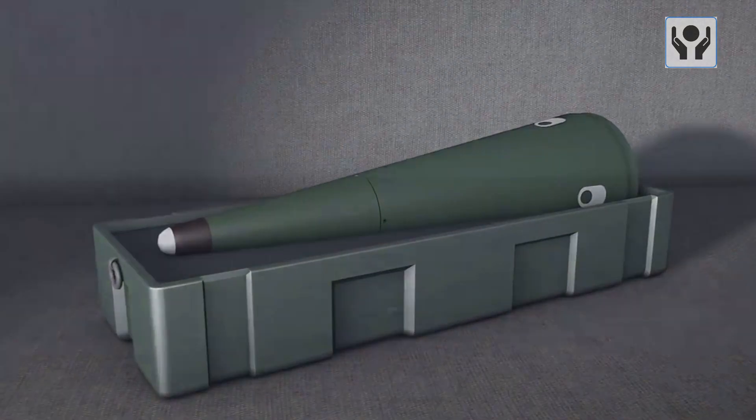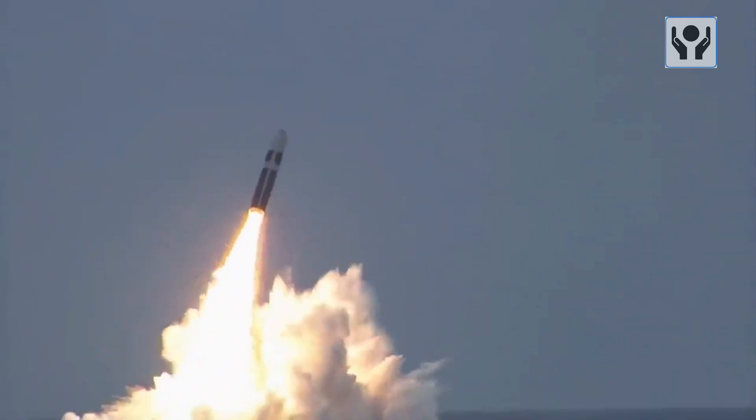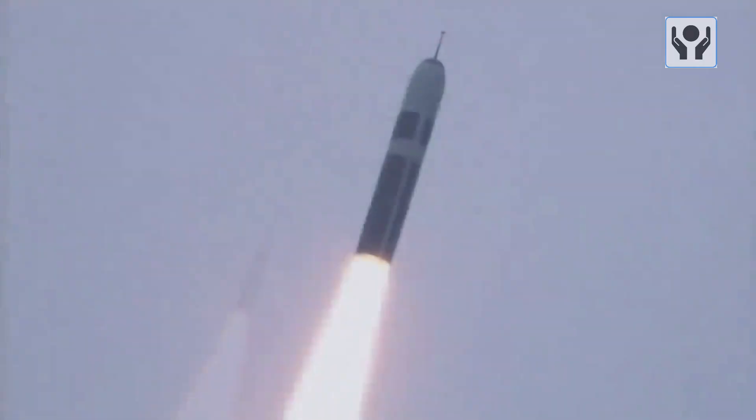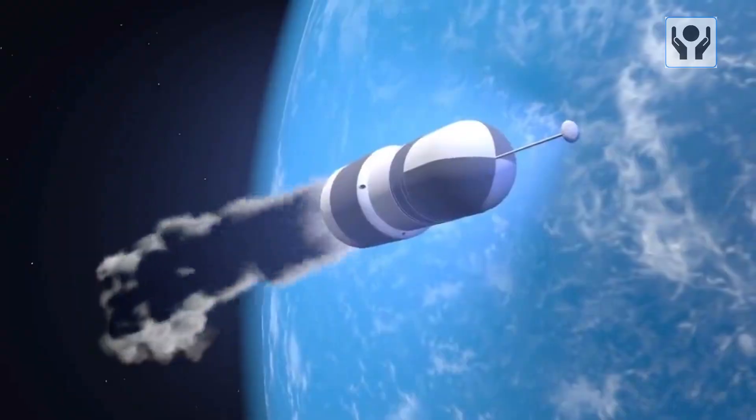The W-88 thermonuclear warhead is a compact and high-yield nuclear weapon that was developed by the United States during the Cold War. It was designed to be deployed on Trident 2D5 submarine-launched ballistic missiles, which are carried on Ohio-class nuclear-powered submarines.